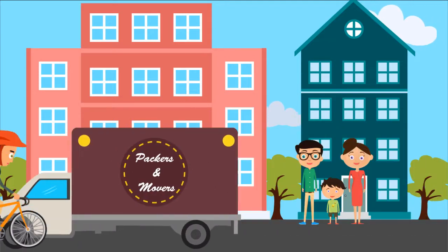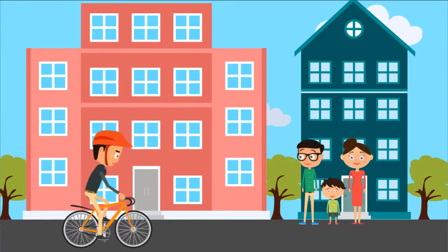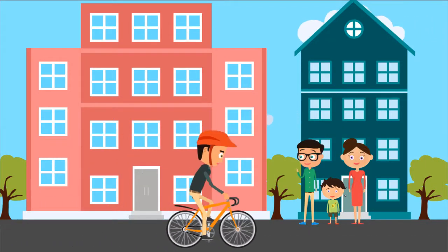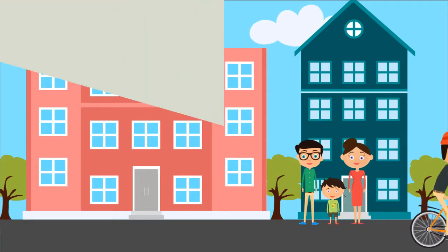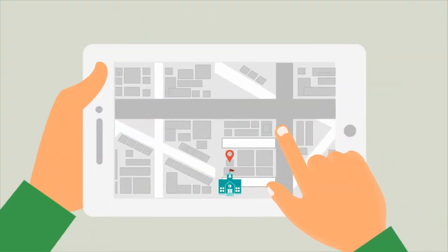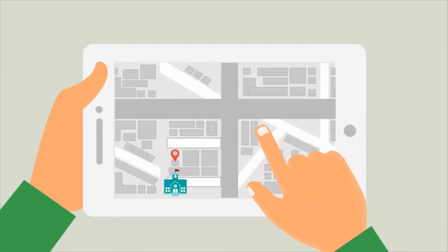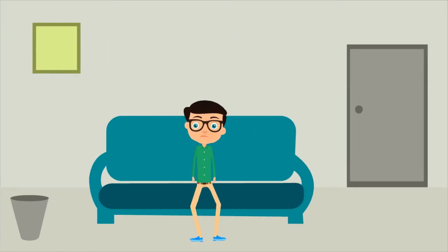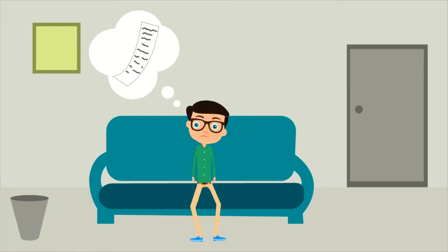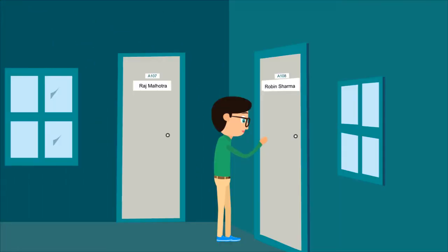Raj has moved into his new apartment with his family but is struggling to connect with his neighbours and find help in settling down. He is searching for a good school for his kids around the locality, an electrician to fix the geyser, and also wants to find an easier way to pay his maintenance due. He tried to knock at his neighbours but they are out of the house most of the time.